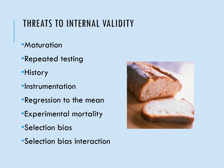There are many threats to internal validity — we want to make sure that whatever treatment, program, or intervention we're running is the real cause behind whatever outcomes or findings we get. There are quite a few threats to that, and we're going to go over these in a bit more detail. They are: maturation, repeated testing, history, instrumentation, regression to the mean, experimental mortality, selection bias, and selection bias interaction.